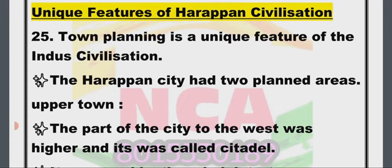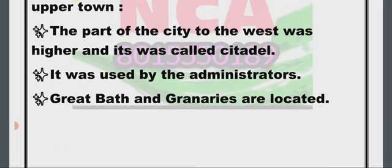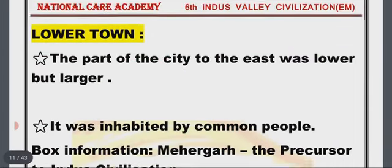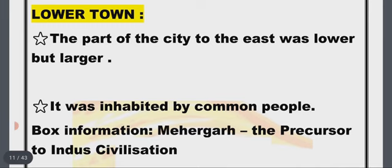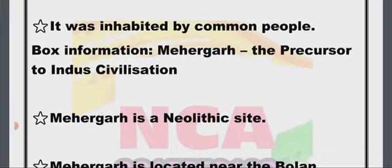The Harappan city had two planned areas. Upper town: the part of the city to the west was higher and was called the citadel — it was used by the administrators, and the Great Bath and granaries are located here. Lower town: the part of the city to the east was lower but larger, and it was inhabited by common people.